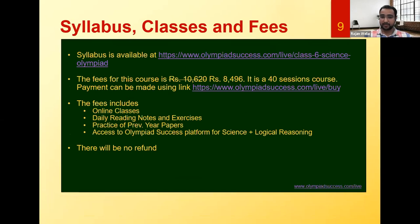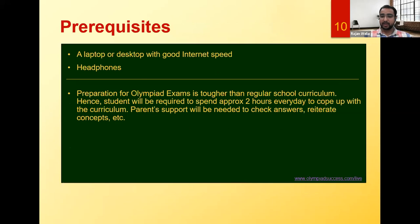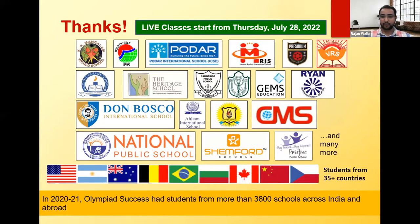You will also get reading material and practice questions available on the Olympiad Success dashboard. With this course you get free access to topic-wise mock tests for Science as well as Logical Reasoning. The syllabus link will be shared in the chat. The fee for this course is ₹8,496 for around 40 sessions. Fee includes online classes, daily reading notes and exercises, practice of previous year papers, and platform access. You need a laptop with good internet. Students should spend approximately two hours every day. Live classes start from 28 July. We currently have students from 3,800 schools across 35+ countries.